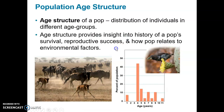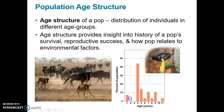The age structure gives biologists a sense of population dynamics and how numbers might change over time. It provides insight into the history of a population's survival — here, a fair number of birds survive to older age — as well as reproductive success. In this example, reproductive success may not be great because there are few one-, two-, or three-year-olds, possibly due to a drought two years ago that limited food supply and made younger and older birds more vulnerable.